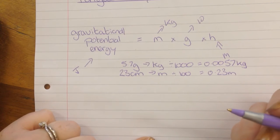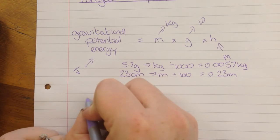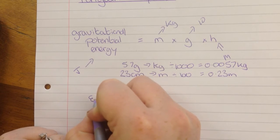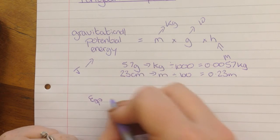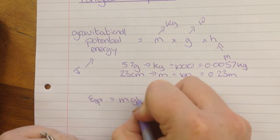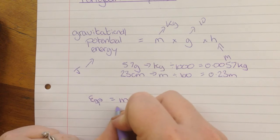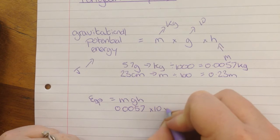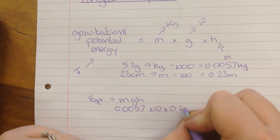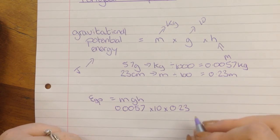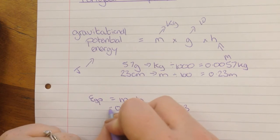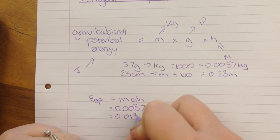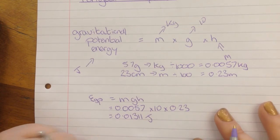Then we just need to plug our numbers into the equation. So gravitational potential energy is what we are working out. This is mass times gravity times height. Our mass is 0.0057 times 10 times the height which is 0.23. We plug all of that into the calculator. And we get a result of 0.01311 joules. So that's gravitational potential energy.